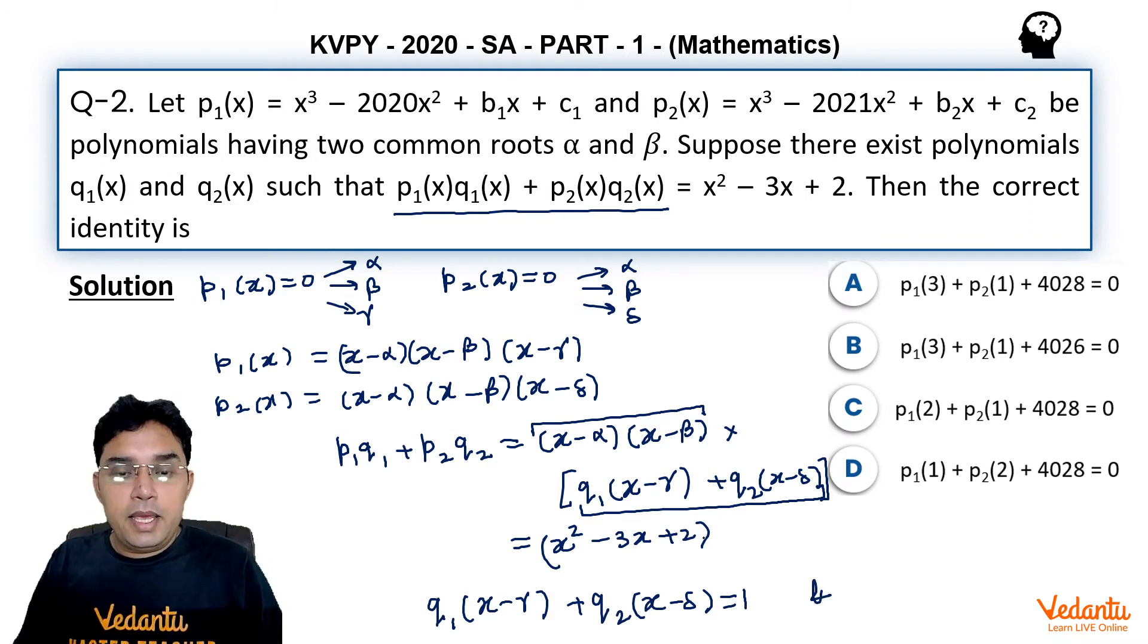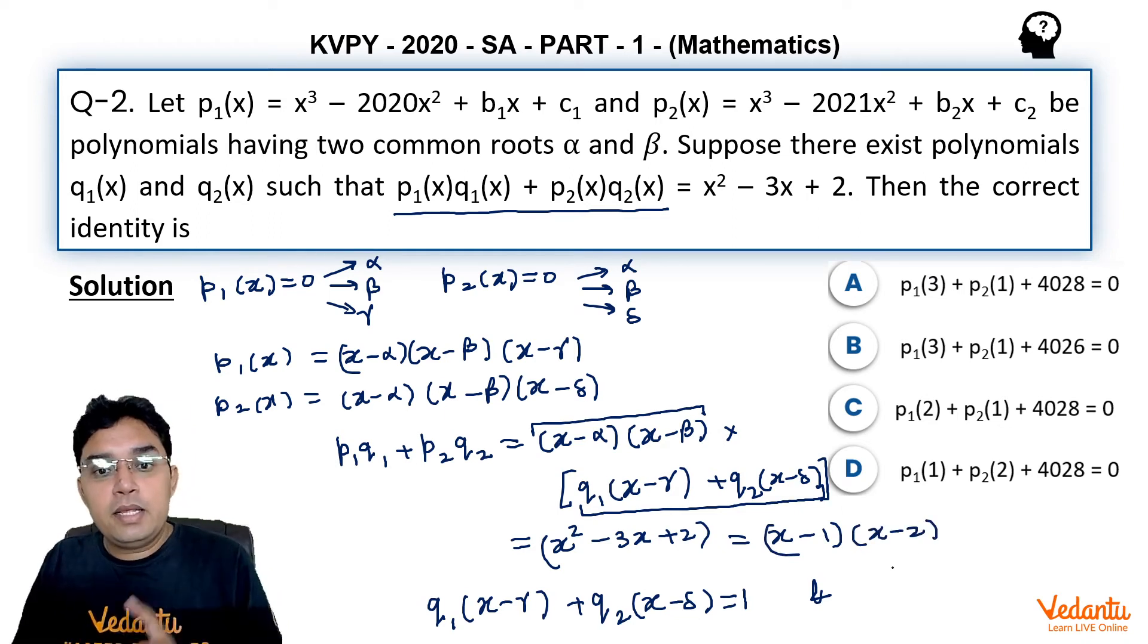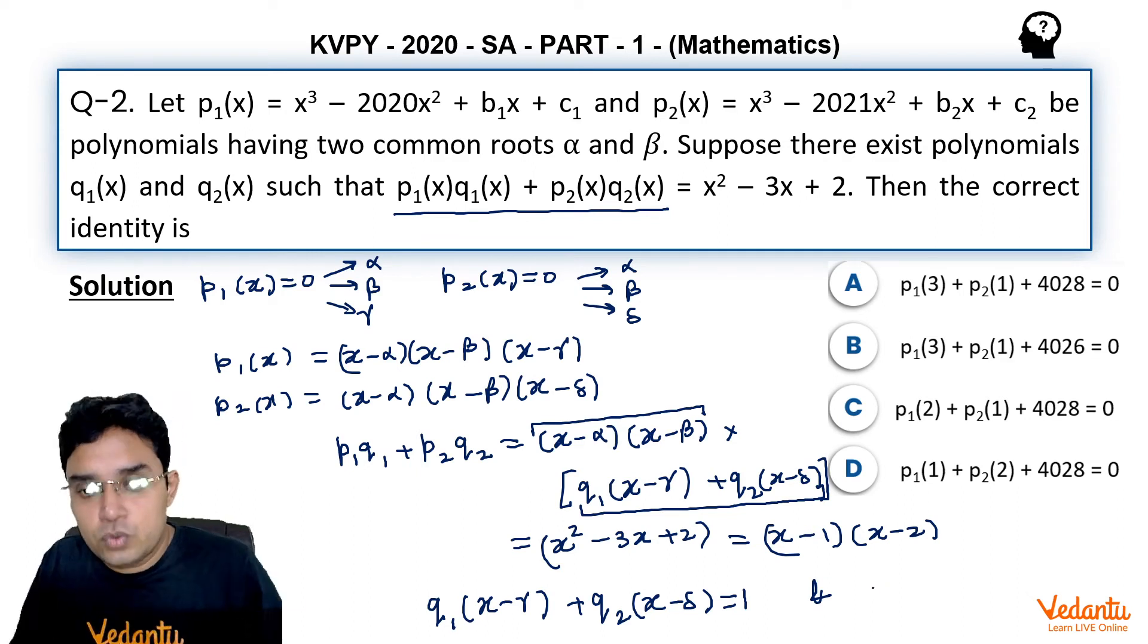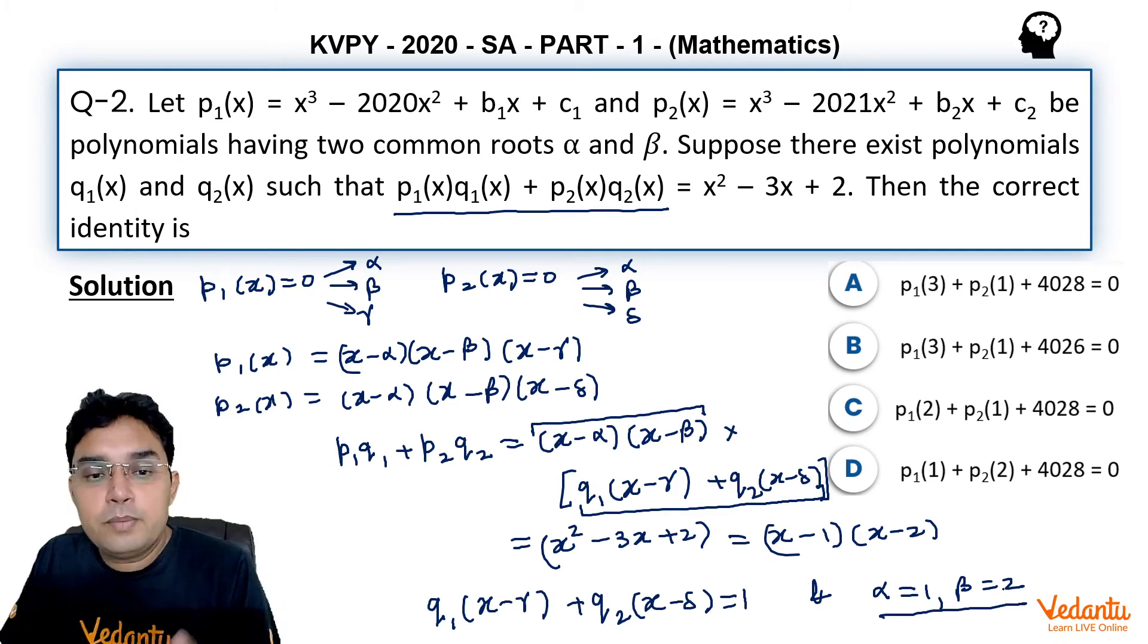And this x² - 3x + 2 can be written as (x - 1)(x - 2). So we will get that common roots α and β to be 1 and 2 respectively. So α will be 1 and β will be 2. So two things we have found out in this first part of the calculation.